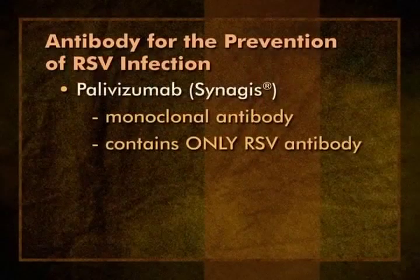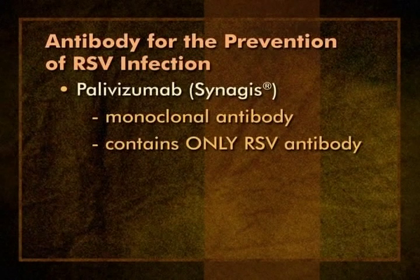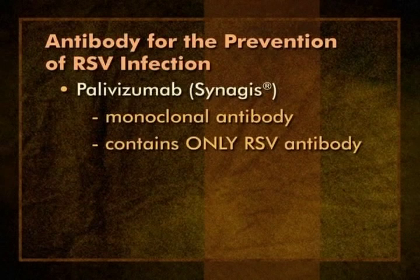Hyperimmune globulin products are also available for post-exposure prophylaxis of tetanus, varicella, and rabies. Vaccinia immune globulin is used to treat certain adverse reactions following smallpox vaccine. There's also an antibody product available for the prevention of infection with respiratory syncytial virus, or RSV, in infants. Although it is used to prevent RSV infection and administered by intramuscular injection, it contains only antibody—it is not a vaccine. The product is palivizumab, or Synagis. Synagis is unique because it's monoclonal—it contains only RSV antibody and does not contain antibody to any other antigen. We'll discuss the implications of this a little later when we talk about antibody-vaccine interactions.